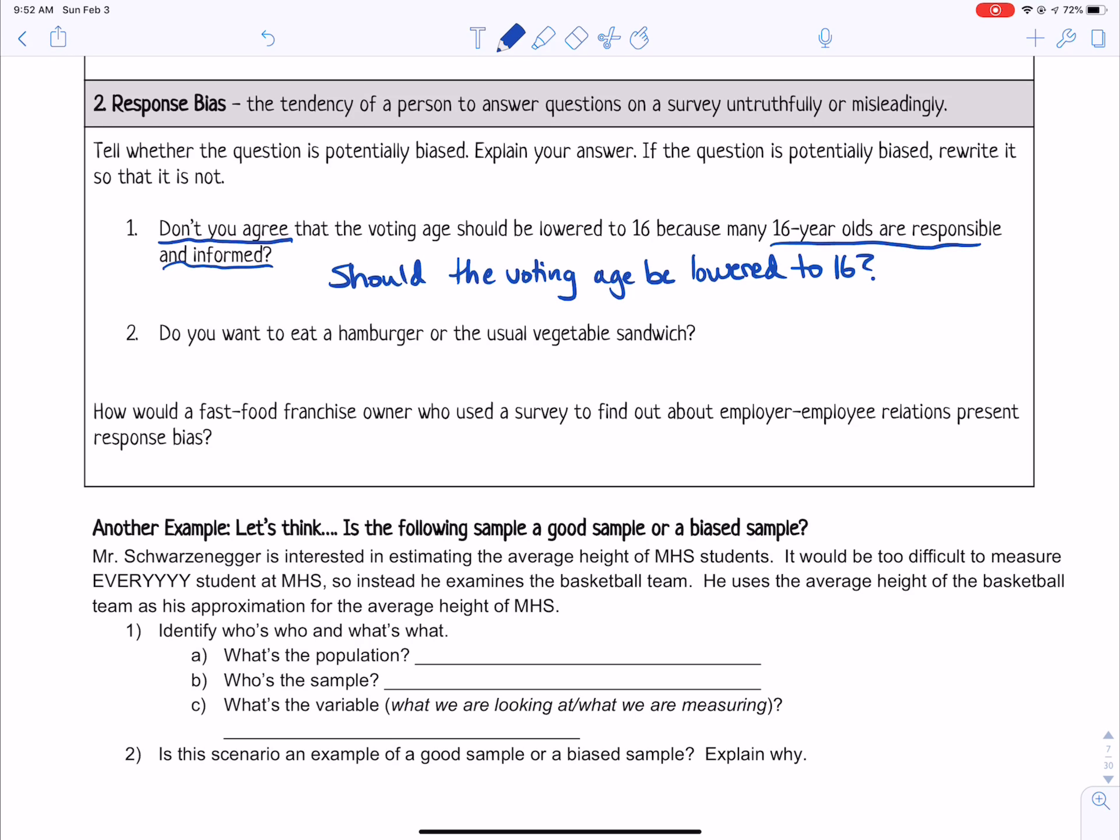And just look at that. The second one says, do you want to eat a hamburger or the usual vegetable sandwich? Saying usual vegetable sandwich would influence someone to choose their usual to make it easy on the waiter or the waitress that might be asking this question. So you could just say, do you want to eat a hamburger?